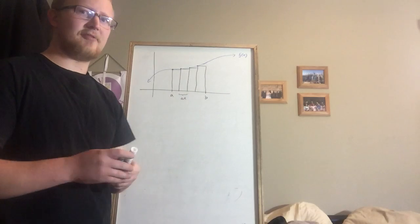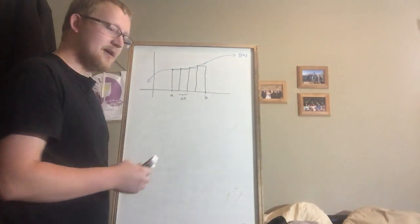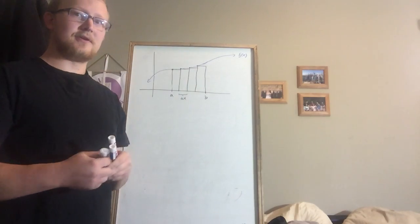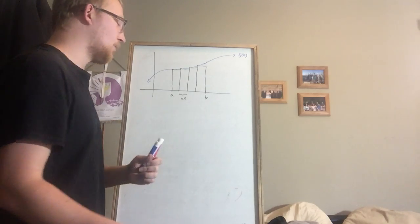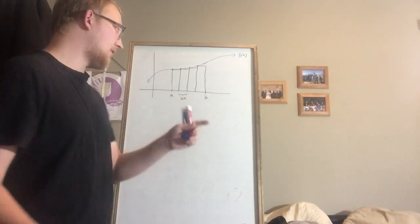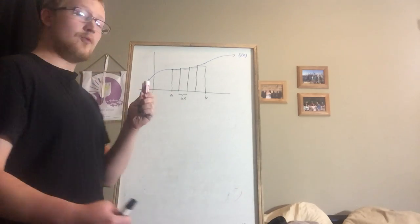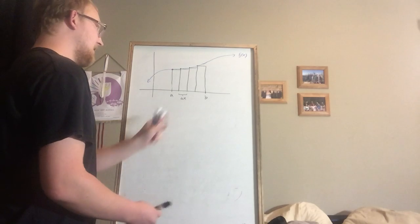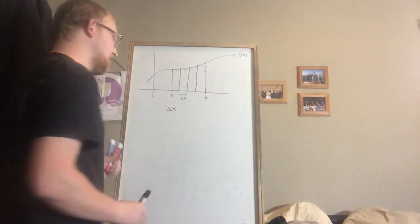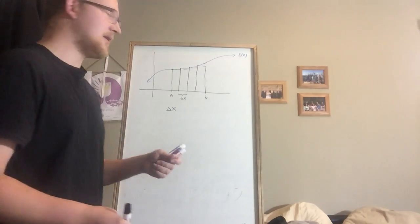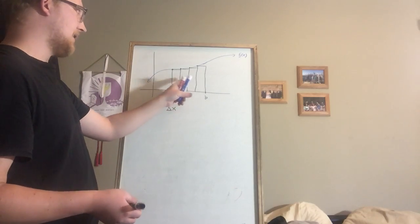Here I have this graph f of x, and I'm curious about the points between a and b. I want to figure out what the area is under a and b. There are a few questions we'll have about this. One is: are the rectangles that I'm going to estimate with equal width? We usually use equal width, so we're going to call the width of each rectangle delta x — a change in x. The next question is how many rectangles do I want to use? In this drawing I've used 4.